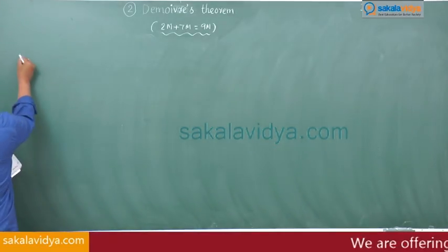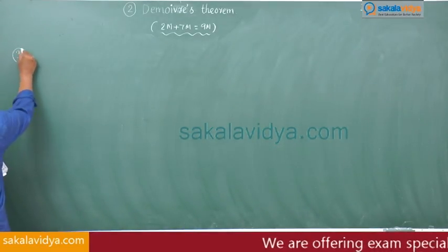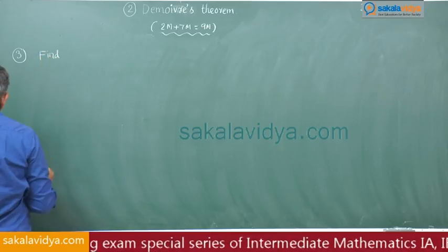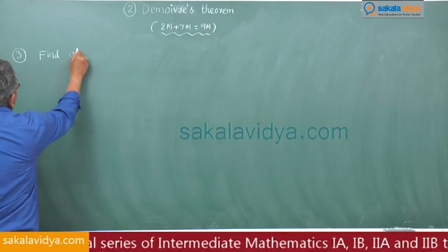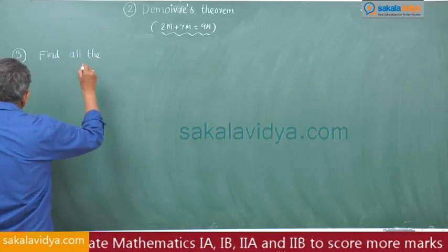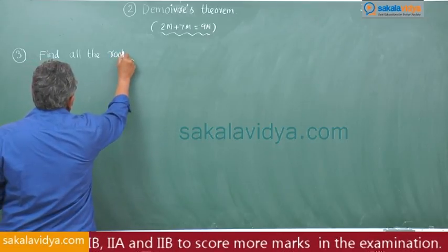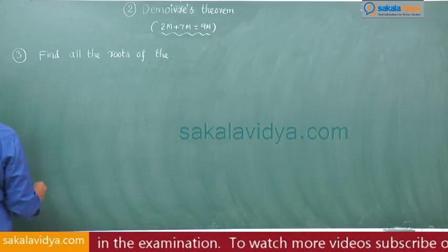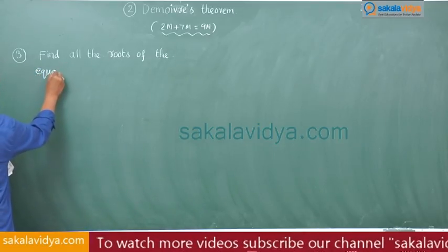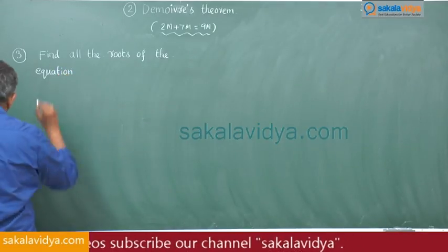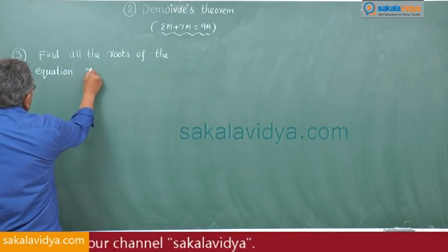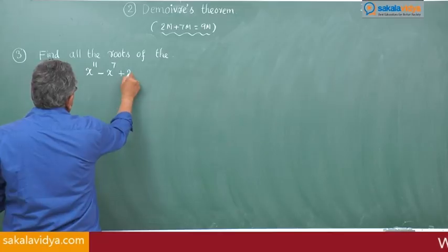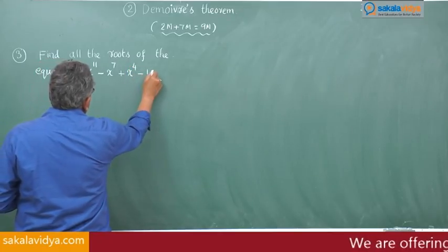Third problem under long answer type questions. Find all the roots of the equation x to the power of 11 minus x to the power of 7 plus x to the power of 4 minus 1 is equal to 0.